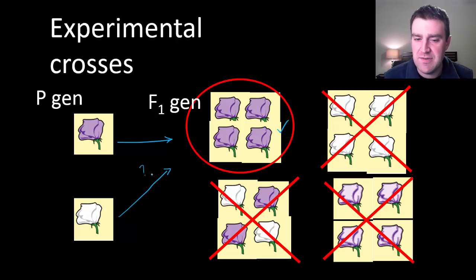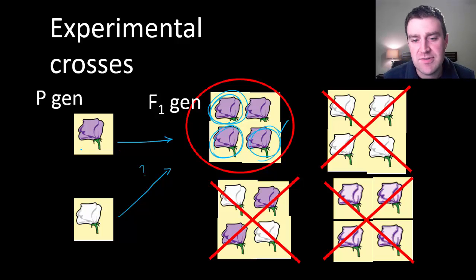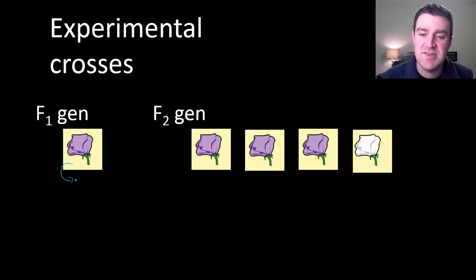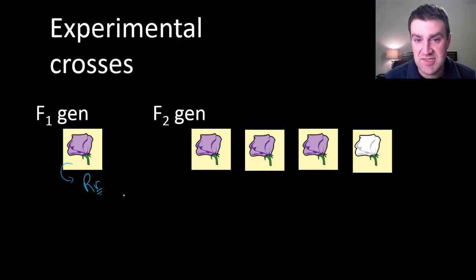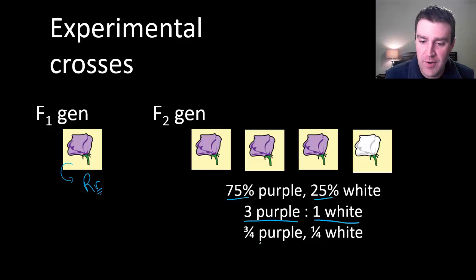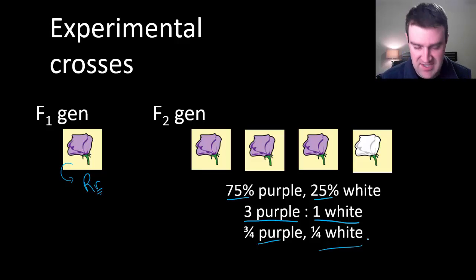To investigate, Mendel asked whether the offspring were pure breeds or hybrids by self-pollinating those purple plants. It turned out they were all hybrids — all heterozygous, all carrying the recessive allele for white flower. 25% of the offspring came out with white flowers, giving a ratio of 75% purple to 25% white, or 3:1. That was a really important mathematical pattern for Mendel.